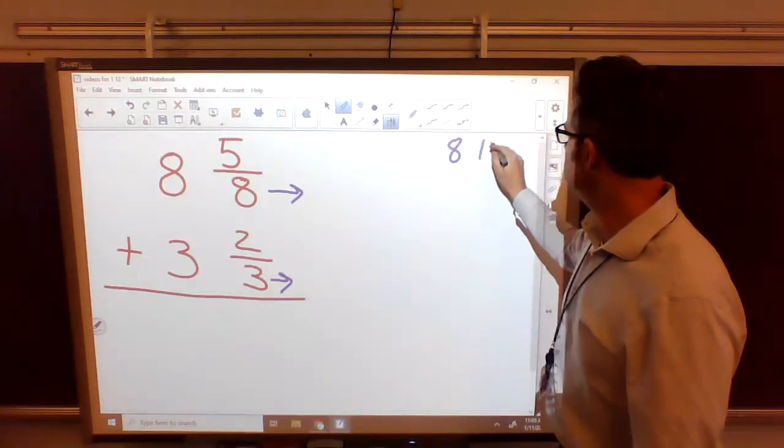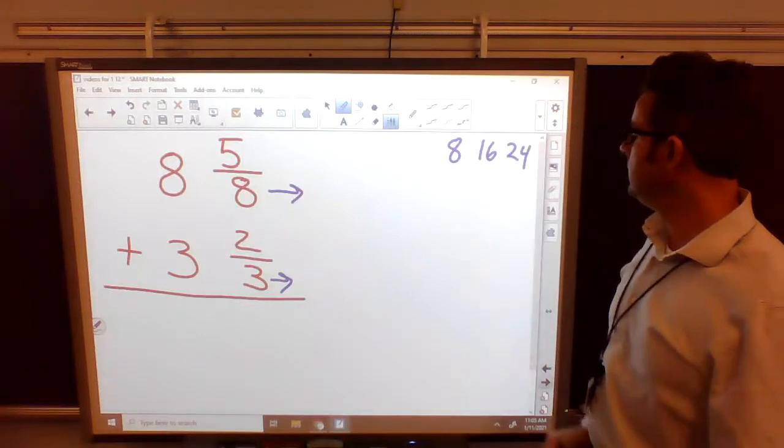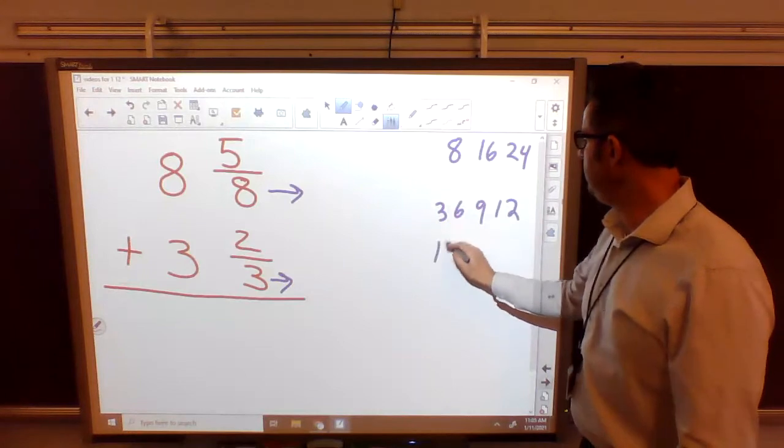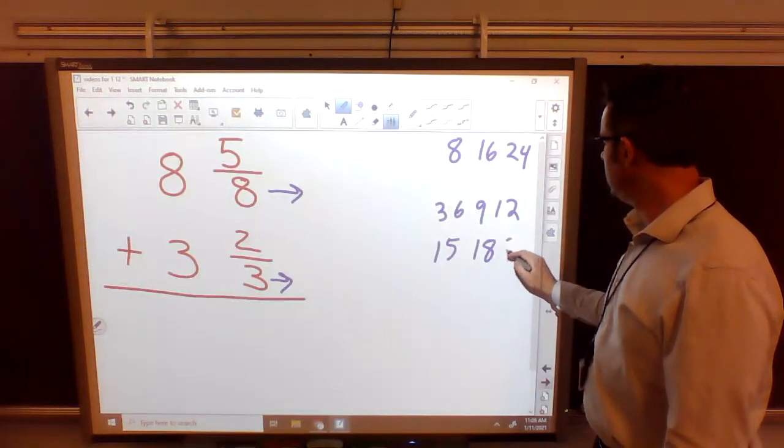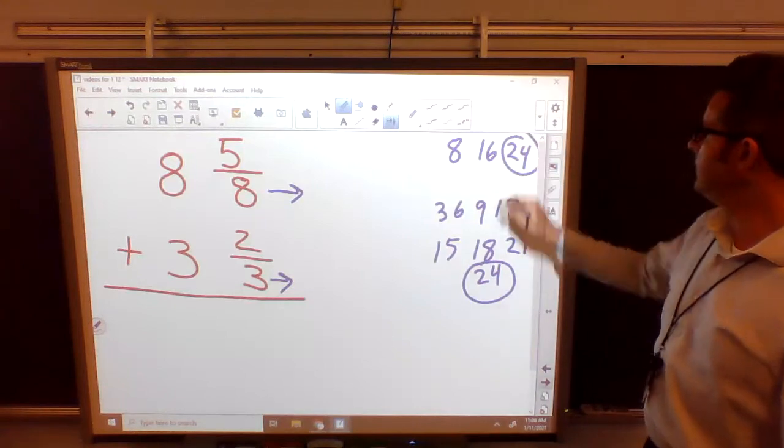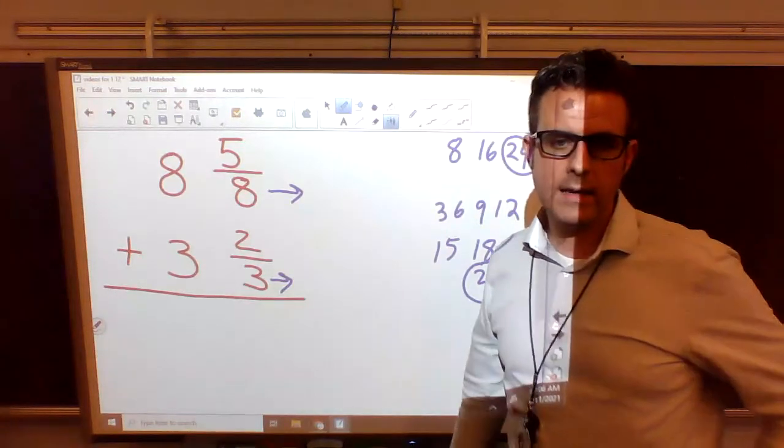Well, we do 8, 16, 24. We do 3, 6, 9, 12, 15, 18, 21, 24. 24 is the least common multiple of 8 and 3. So we have to turn both of these into 24.